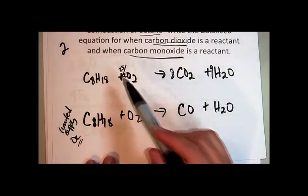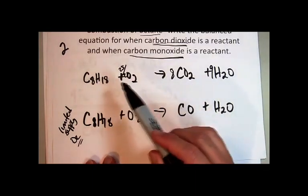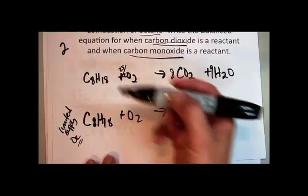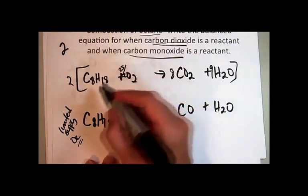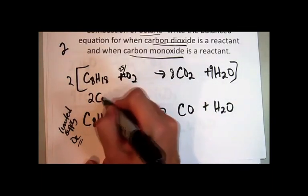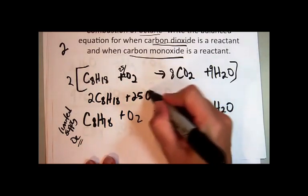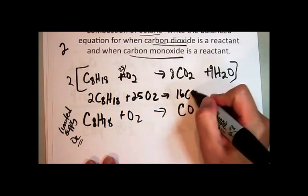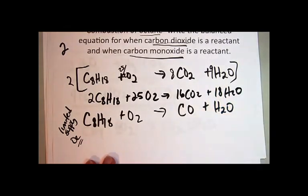So what you can do, though, is you just use it as a problem-solving tool to get things balanced. Now you have 25 halves times 2 is 25 is balanced. Then you just clear the fraction, just like any kind of algebraic work. Multiply 2 times both sides of the equation, and then it'll become balanced. So the fraction clears. And there you go. It's balanced.